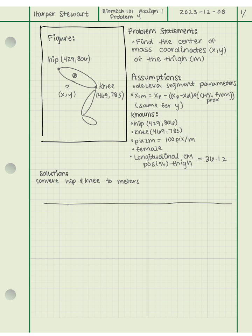So for the hip x coordinate, we're going to take 429 pixels and multiply that by 1 over 100 meters per pixel, and that equals 4.29 meters, which is the x coordinate of the hip. We're going to repeat that process for the y coordinate of the hip, the x coordinate of the knee, and the y coordinate of the knee.